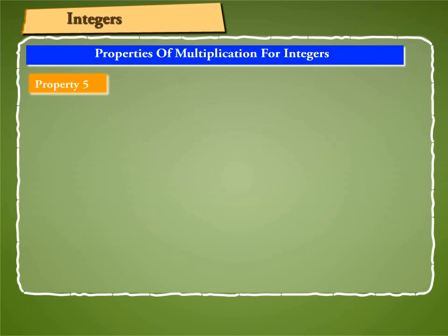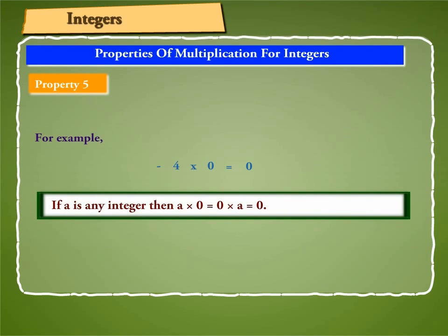Property 5: Let us multiply an integer by 0. For example, minus 4 into 0 is equal to 0. Thus, the product of any integer by 0 is 0. Hence, if A is any integer, then A into 0 is equal to 0 into A is equal to 0.